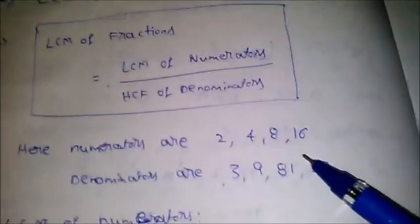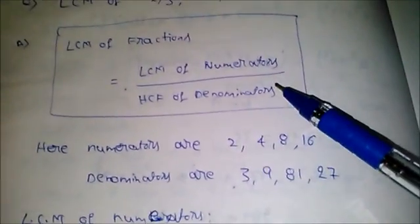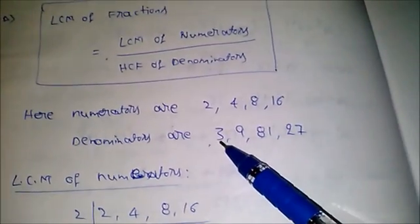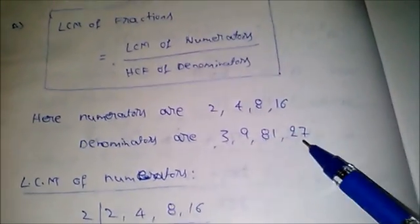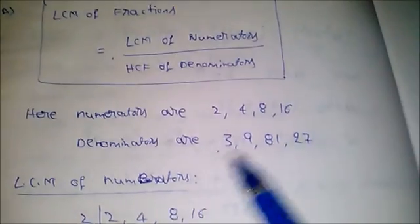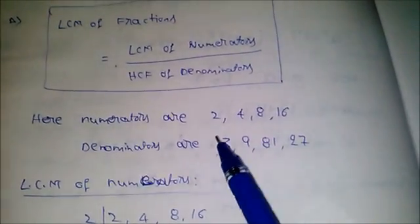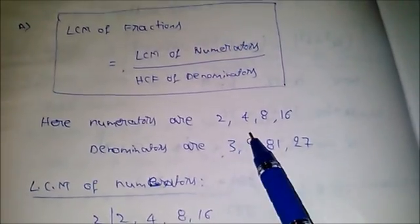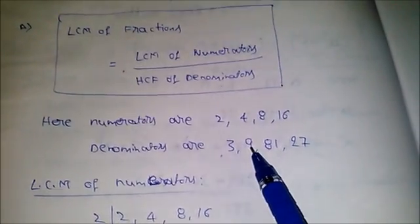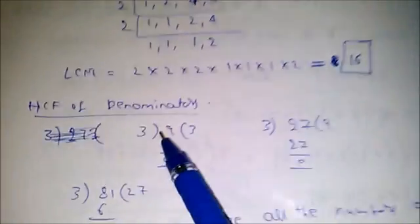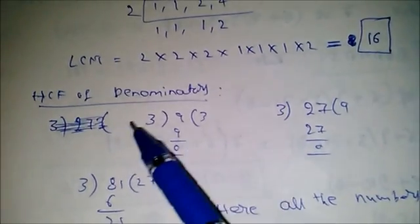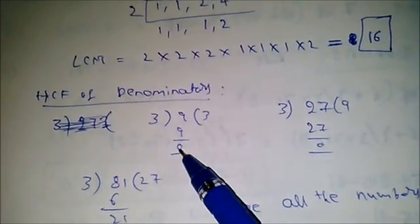We need to find the HCF of denominators. Take the denominator values 3, 9, 81, 27. Consider the least value, which is 3, and divide the next value by it: 9 divided by 3 gives remainder 0.